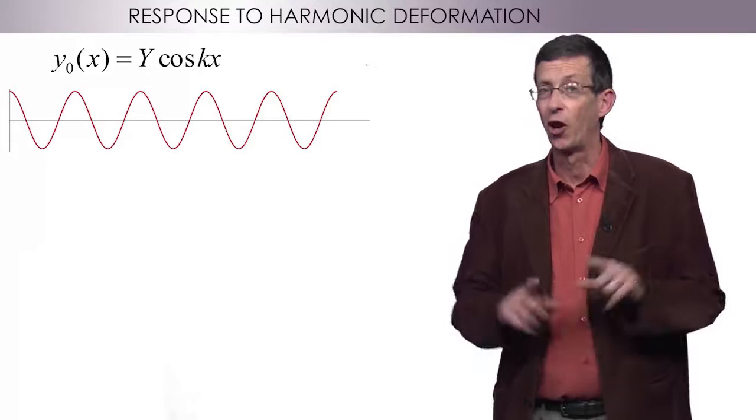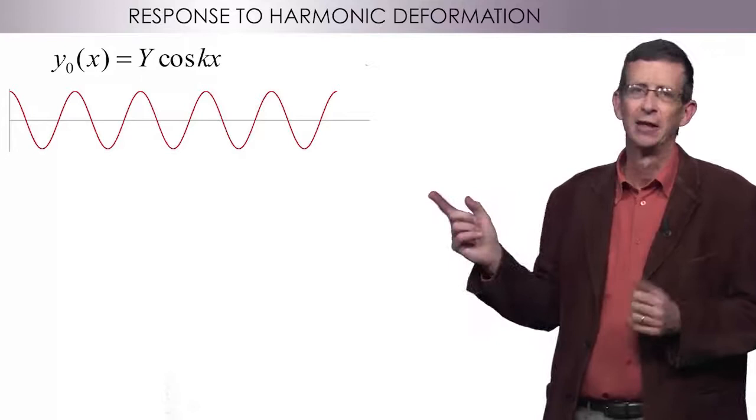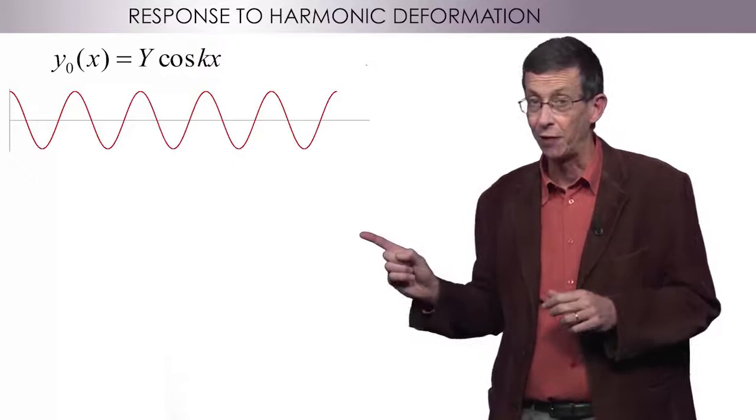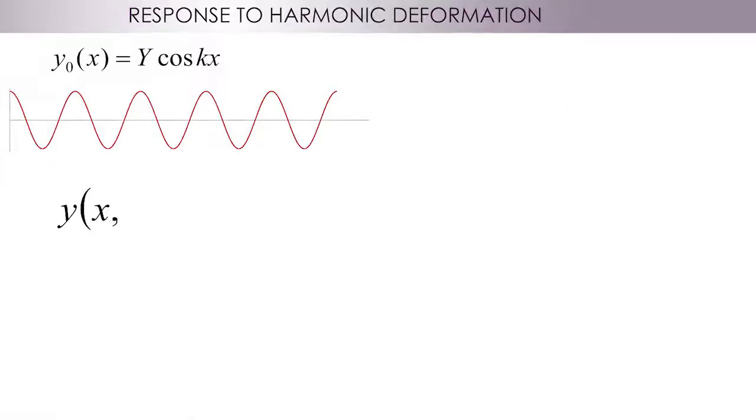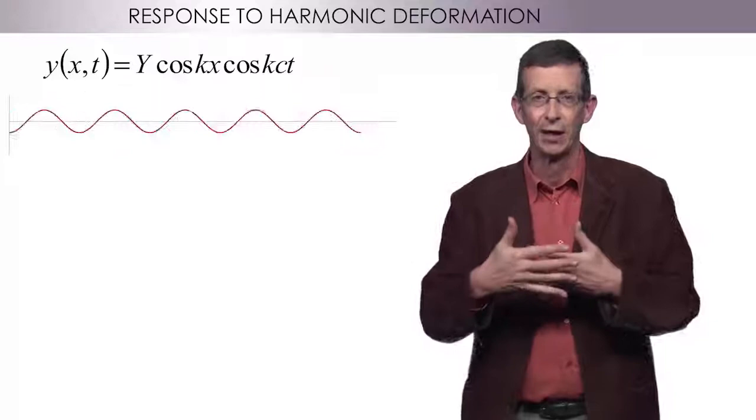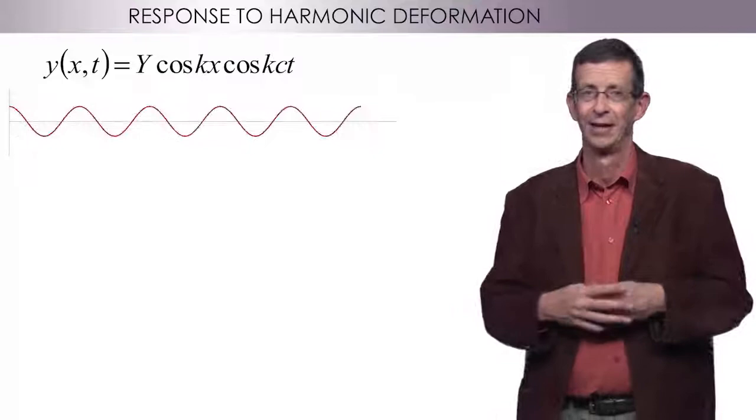There is a special case of particular interest, that of a harmonic deformation. Imagine that the initial deformation is just sinusoidal in space, y cos kx. The quantity k here is called the wave number. Using the solution we just derived, we know what will happen. The displacement will be the sum of two waves, y equals one half of y cos k(x minus ct) plus y cos k(x plus ct). But this is also equal to y cos kx times cos kct. This means that the initial shape oscillates. The two waves that go in opposite directions result in this oscillation.